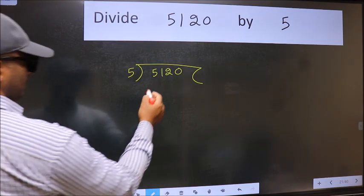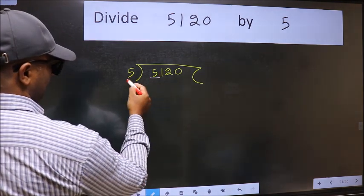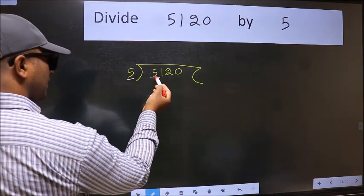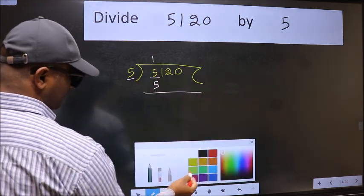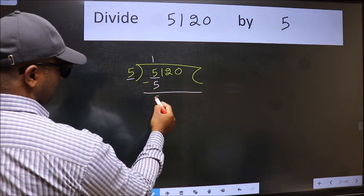Next. Here we have 5 and here 5. When do we get 5 in 5 table? 5, 1, 5. Now we should subtract. We get 0.